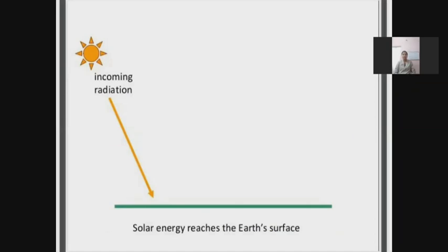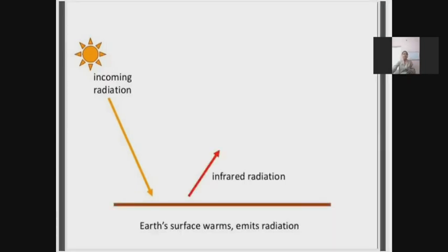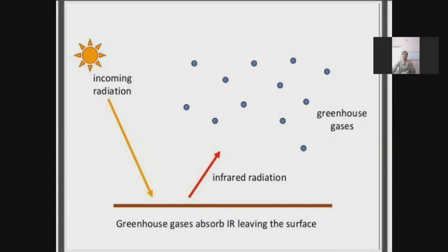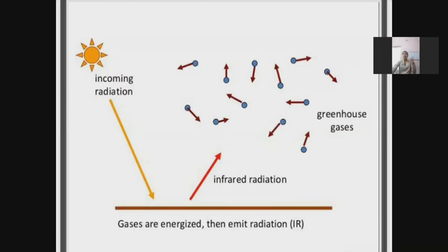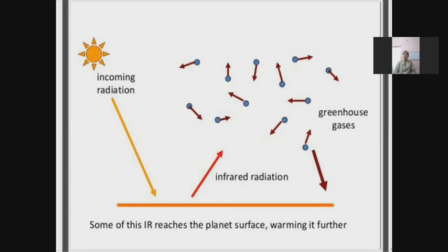Here you can see the sun and the incoming radiation reaching the earth's surface. In the second figure, the incoming radiation warms the surface and it emits infrared radiation. On emitting this infrared radiation, it is absorbed by the greenhouse gases, which become energized and emit the infrared radiation again, thereby warming up the surface of the earth. This is all about the actual process.